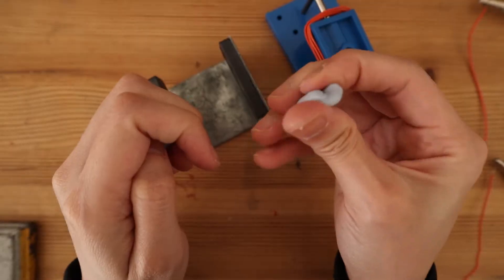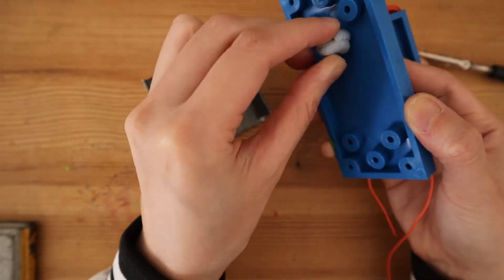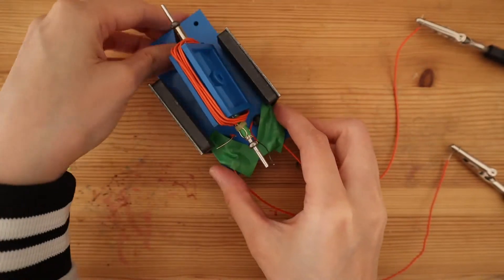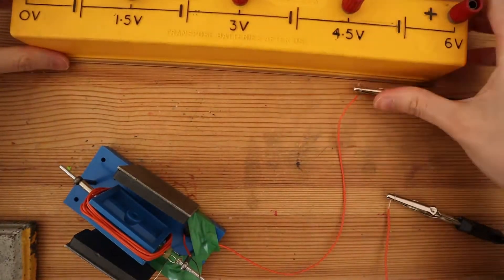I used some blue tack to secure the base on the steel yoke to prevent it from moving around once the motor is on. Now let's connect the leads to a battery pack.